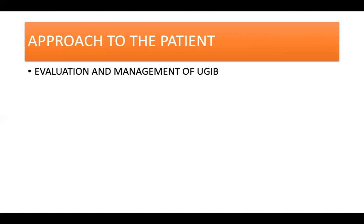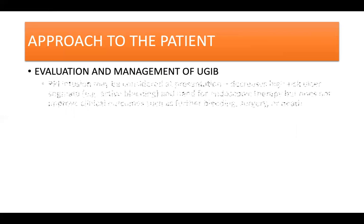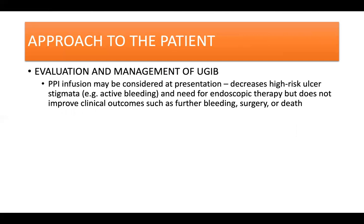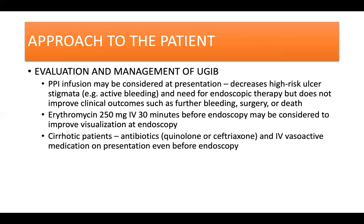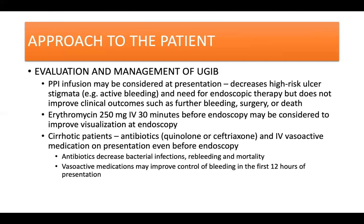In managing a patient with possible upper GI bleeding, PPI infusion may be considered at initial presentation as it decreases high-risk ulcer stigmata and need for endoscopic therapy, although it does not improve clinical outcomes such as further bleeding, surgery, or death. The pro-motility agent erythromycin at 250 mg IV can be administered around 30 minutes before endoscopy to improve visualization. Cirrhotic patients presenting with upper GI bleeding should be given an antibiotic, either a quinolone or ceftriaxone, and IV vasoactive medication upon presentation even before endoscopy. The antibiotics decrease bacterial infections, re-bleeding, and mortality, and vasoactive medications may improve control of bleeding in the first 12 hours of presentation.